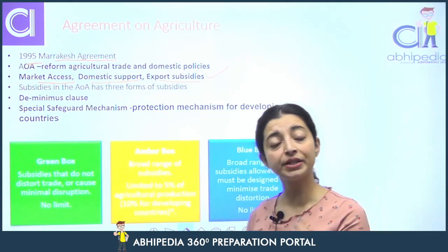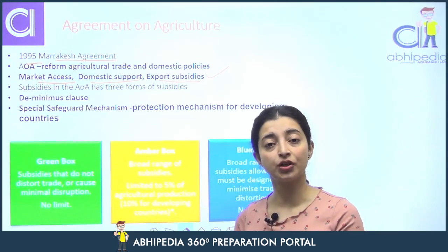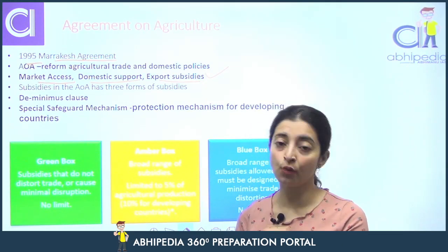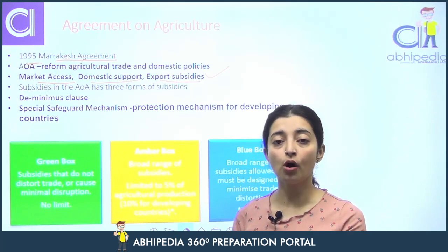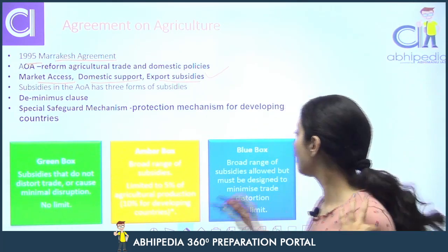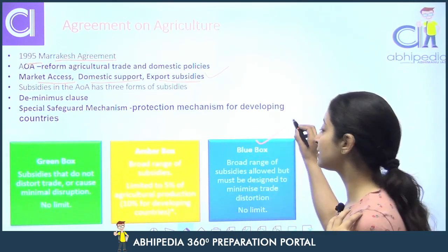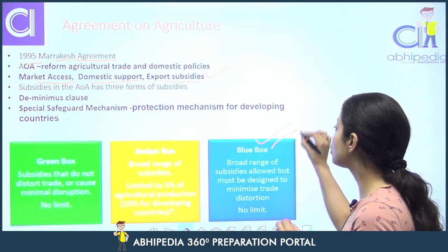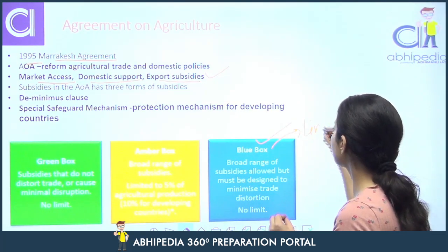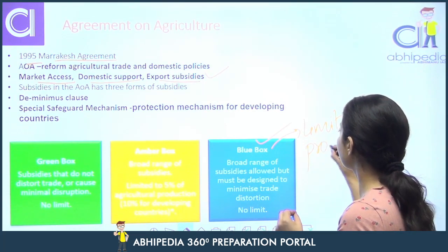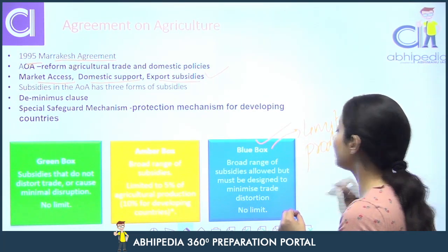Jo subsidies hain agriculture mein, Agreement on Agriculture ke under, woh 3 boxes mein divided hain: Blue box, Green box, and Amber box. Blue box subsidies kaunsi hain? These are subsidies which limit the production — yeh production ko limit karne ke liye jo subsidies provide ki jaati hain, unko kehte hain blue box subsidies.